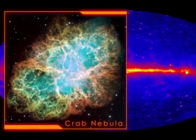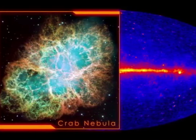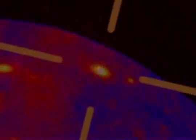Here's what the sky looks like in high-energy gamma rays. The pulsar in the Crab Nebula is among the brightest sources.